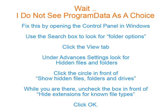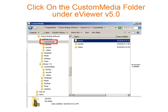Some versions of Windows may not let you see Program Data, but this is easy to fix — just go to the Control Panel. You may want to pause this video while you go make the Program Data appear on your computer. Next, click on the version 5 custom media folder on the left. We want to see three other folders on the right: Photos, Sounds, and Videos.